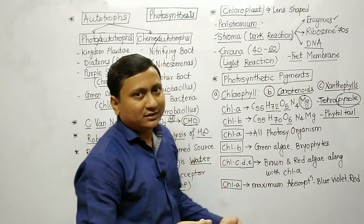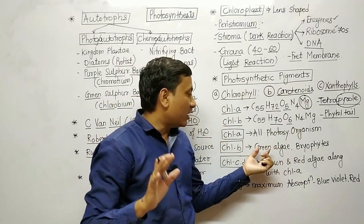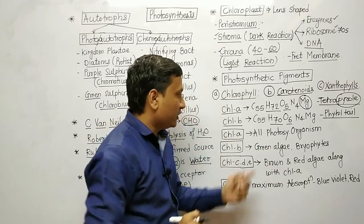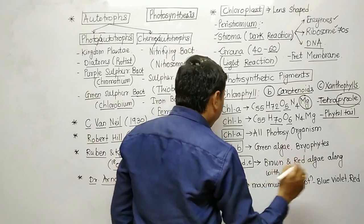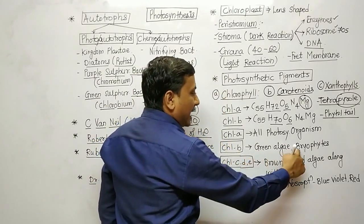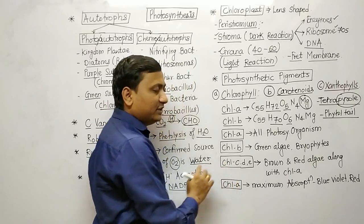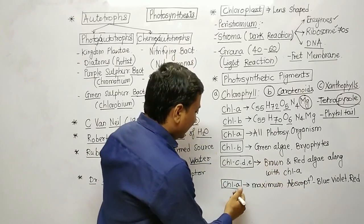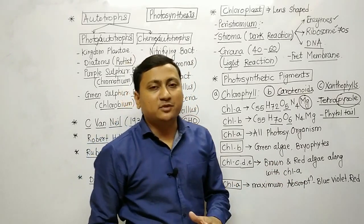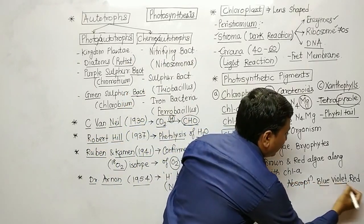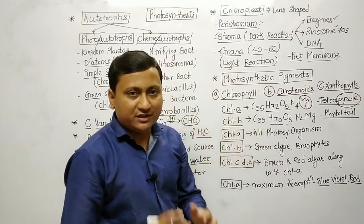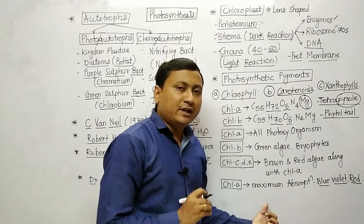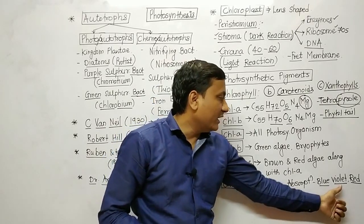Chlorophyll A is observed in all photosynthetic organisms except photosynthetic bacteria. Chlorophyll B is present in green algae and bryophytes, while chlorophylls C, D, and E are present in brown and red algae along with chlorophyll A. Chlorophyll A shows maximum absorption in blue-violet and red light in the visible radiation range, and photosynthesis shows maximum rate in these wavelengths.